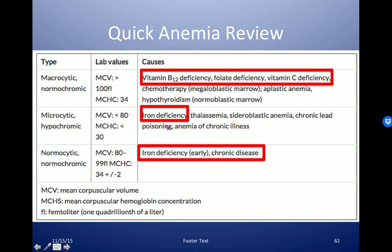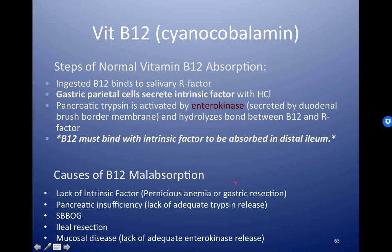Specifically we're going to talk about B12, and if you see a microcytic anemia or an anemia of chronic disease you should be suspicious of iron deficiency. The key thing you really need to know in relation to the Schilling test is that in order to absorb B12 into the distal ileum, intrinsic factor has to be present, and intrinsic factor comes from the parietal cells. There are more causes than just lack of intrinsic factor for vitamin B12 malabsorption, and they are listed here, related to problems with the steps in the absorption.